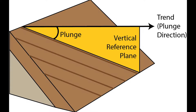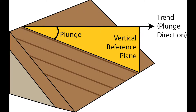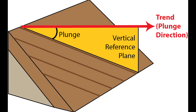A complete lineation measurement consists of two parts: trend and plunge. With lineation measurements, the vertical reference plane passing through the lineation is really important. Plunge is similar to dip in that it is the vertical angle between the lineation and a horizontal line. A horizontal lineation has 0 degrees plunge, and a vertical lineation has 90 degrees plunge. Trend is the directional bearing of the vertical plane that passes through the lineation — in other words, trend is the same thing as plunge direction. Unlike strike, trend only has one correct bearing, because it is the direction towards which the lineation plunges down.